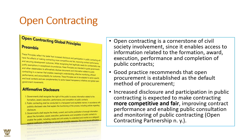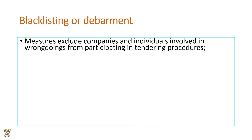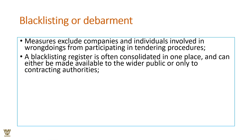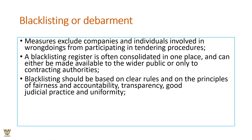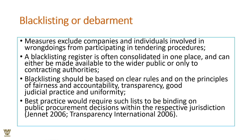Blacklisting or debarment measures exclude companies and individuals involved in wrongdoing from participating in tendering procedures. Blacklisted entities are not entertained because they have behaved in a shabby or shady manner in previous contracts, losing their credibility. Blacklisting can be for life or for a fixed period. Blacklisting registers are consolidated in one place and made available to the public. Blacklisting must be based on clear rules, principles of fairness, accountability, transparency, and judicial practice, and should be binding across the respective jurisdiction.